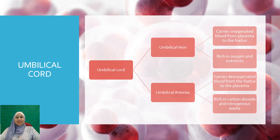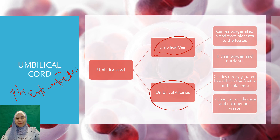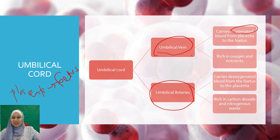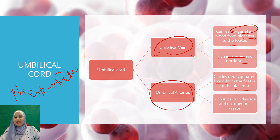The umbilical cord is a tube that connects the placenta to the fetus. It consists of one umbilical vein and two umbilical arteries. The umbilical vein carries oxygenated blood — rich in oxygen as well as nutrients such as glucose and amino acids — from the placenta to the fetus. The umbilical arteries carry deoxygenated blood from the fetus to the placenta; in other words, it is rich in carbon dioxide and carries nitrogenous waste such as urea.